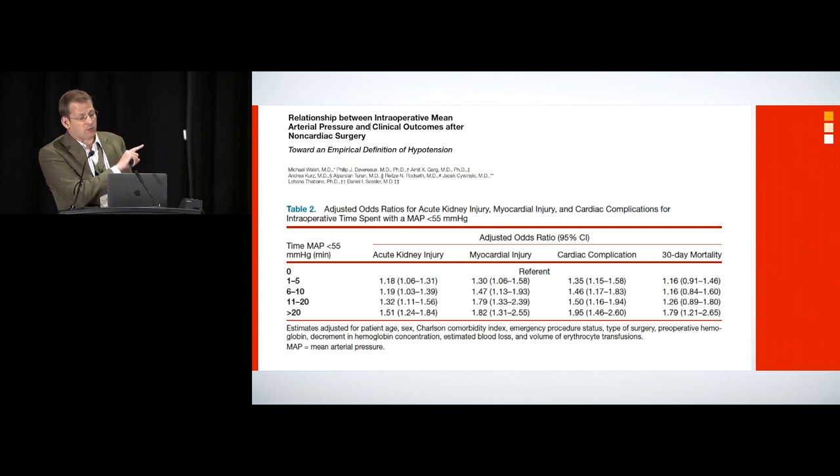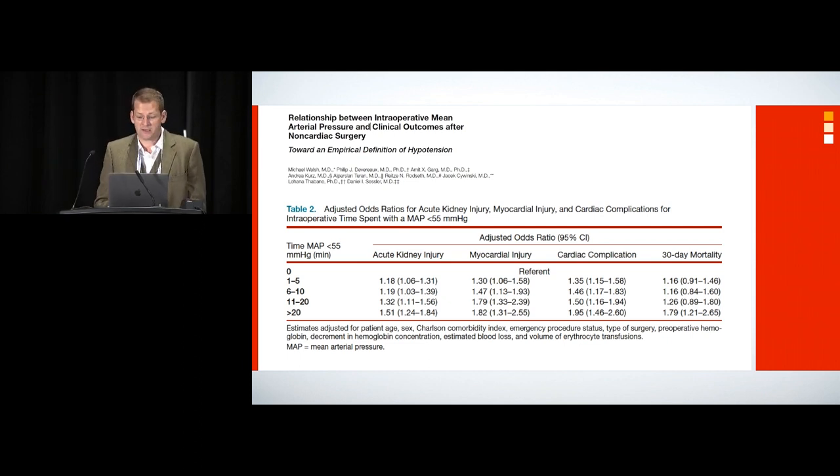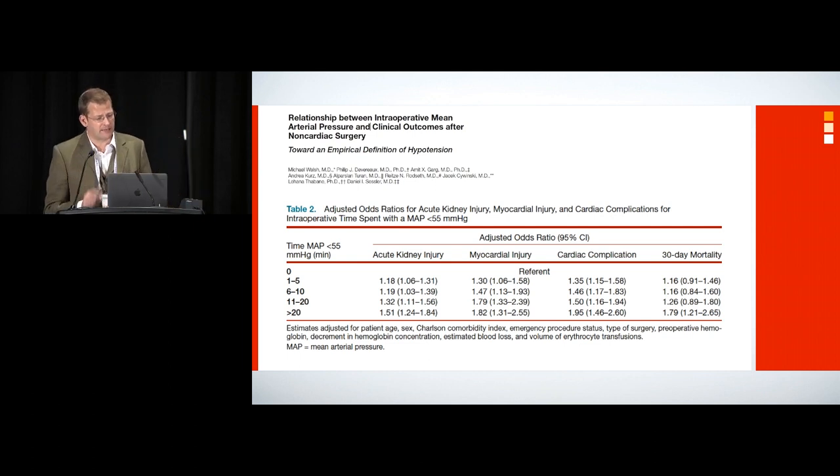That's your cumulative time. Infrequent, small amounts of hypotension add up to harm. Whilst the confidence intervals overlap on this, once again, it's the same kind of message. The lower the blood pressure, the longer you're hypotensive, the higher the risk of injury. And so a prolonged time below 55, that's greater than 20 minutes, is associated also with the worst day-to-day outcome as well. And that's about 4% of patients. So not insignificant.